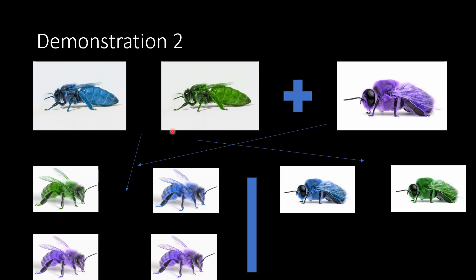So if she chose to fertilize the egg, she would donate either her green chromosome or her blue chromosome to his purple chromosome making a green and a purple worker bee or a blue and a purple. Or if she decided not to fertilize, she could make either a blue drone or a green drone.